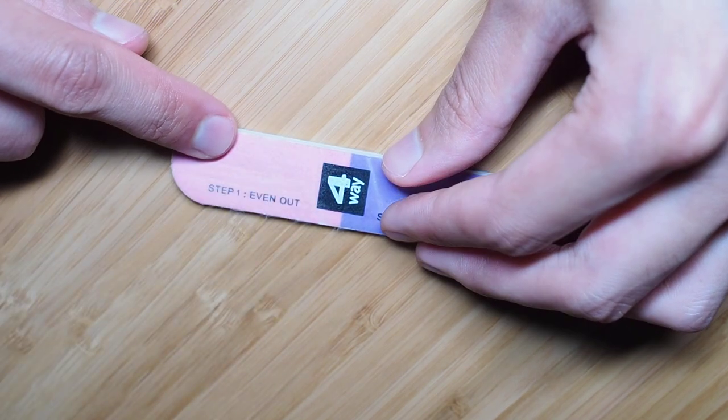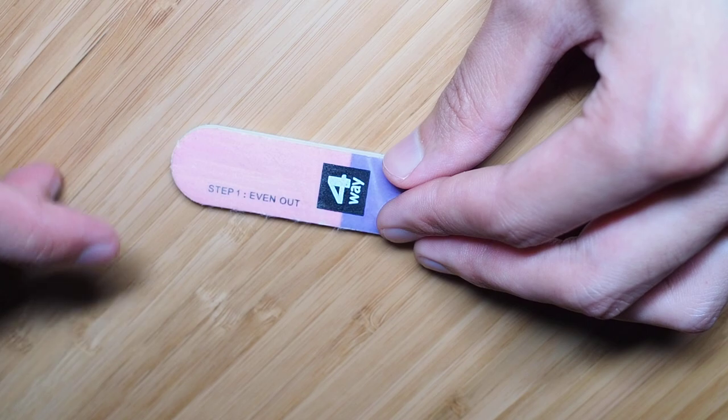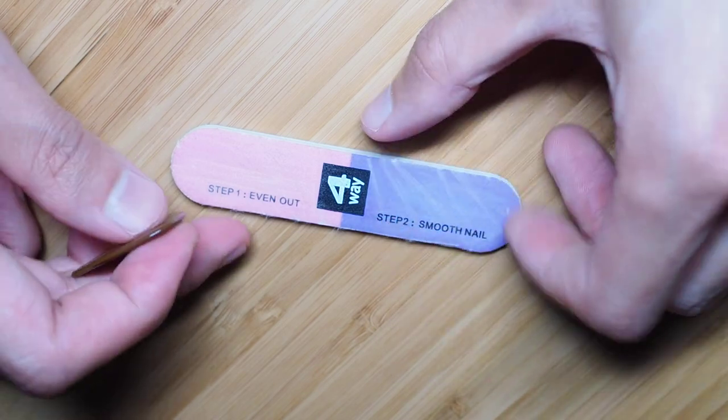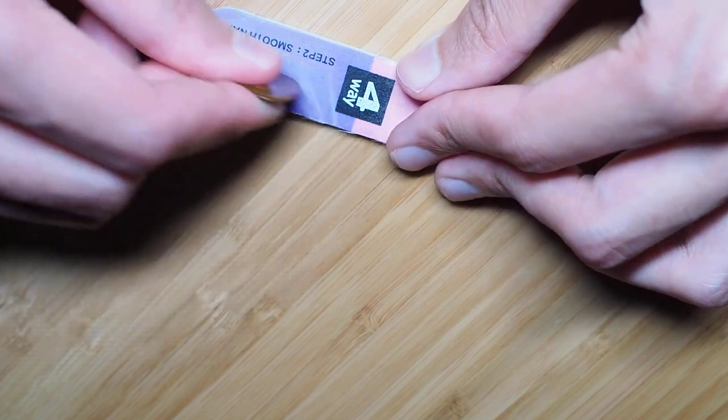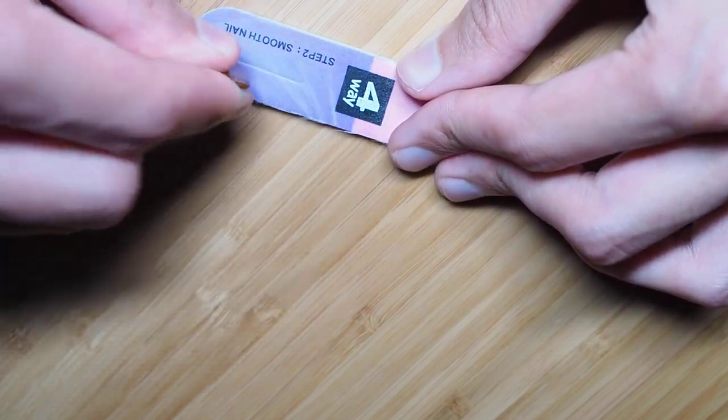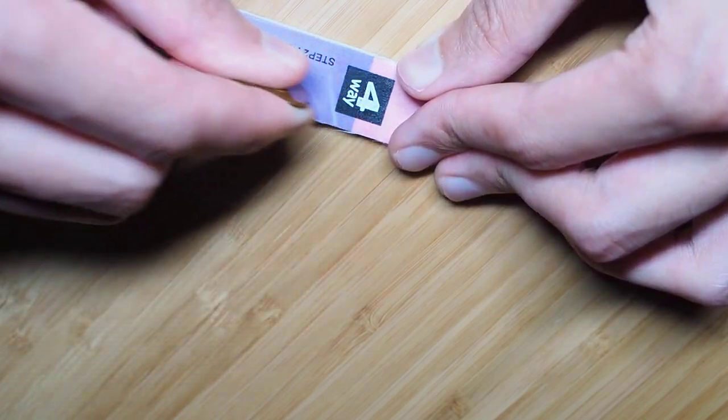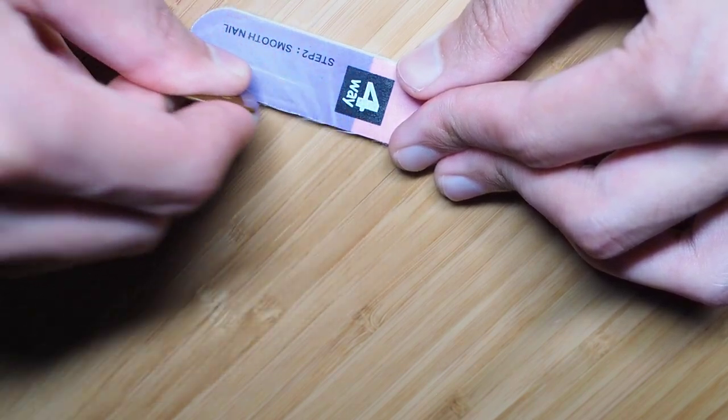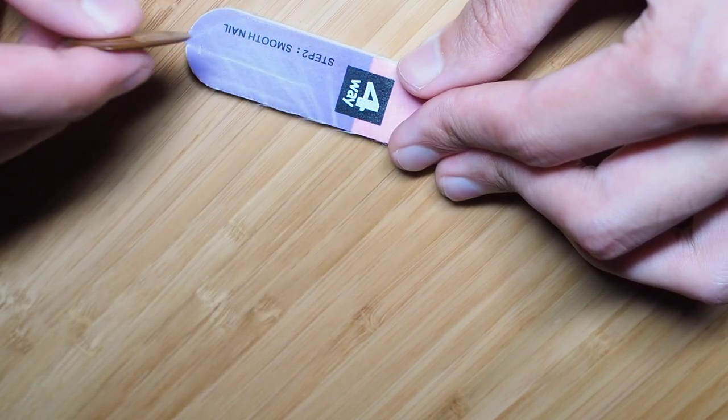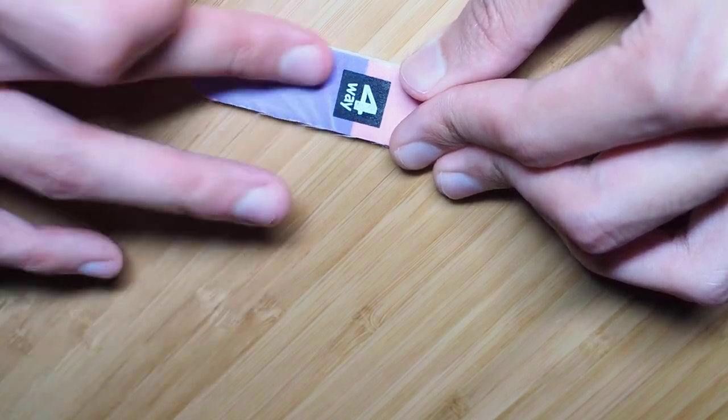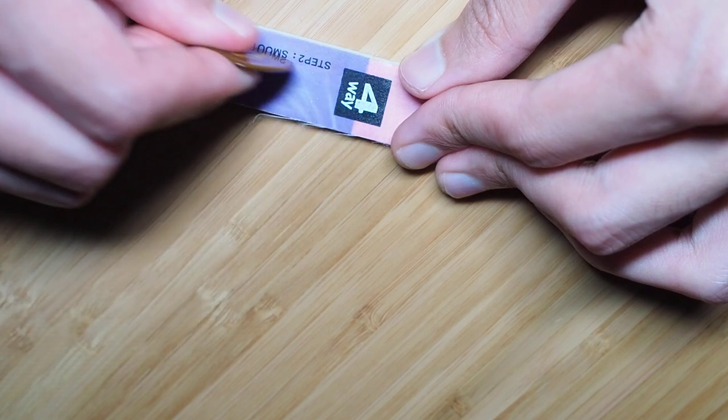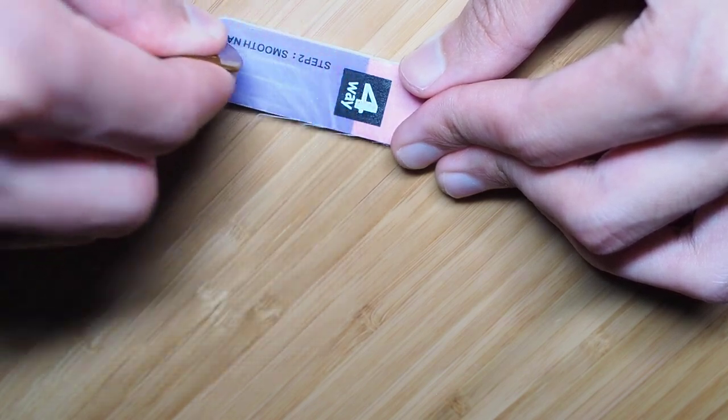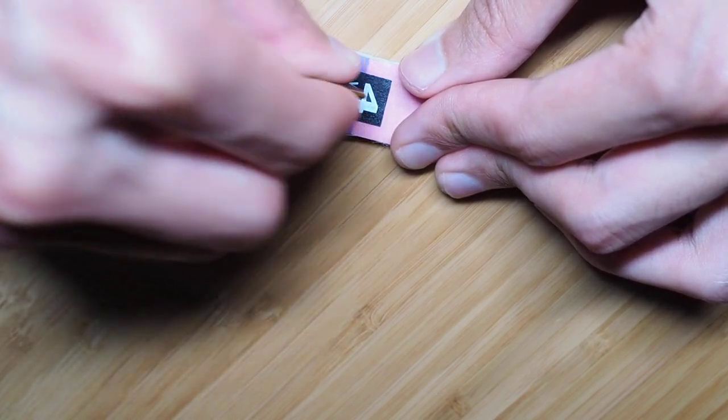And you can actually see some of it coming off over here, so you could tell that it's working. And then you just slowly go through the different grits. Just make sure to switch spots because it'll kind of lose its grittiness if you just stay in the same slot there. Just go back and forth like that.